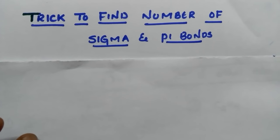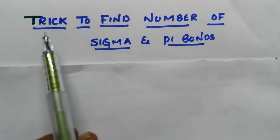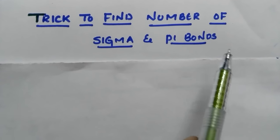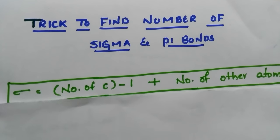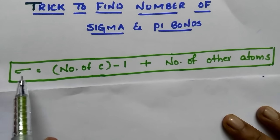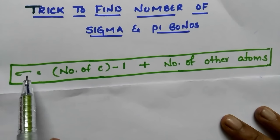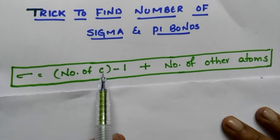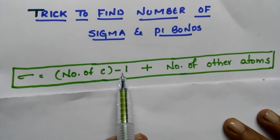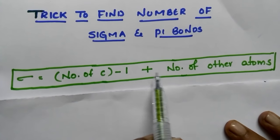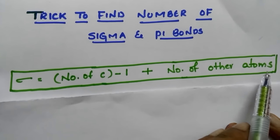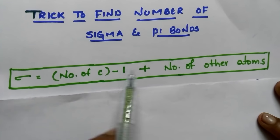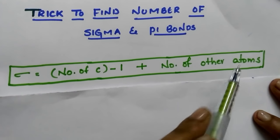Hi students. In today's class I am going to explain a trick to find the number of sigma and pi bonds in a molecule. In order to find the number of sigma bonds, the trick is to calculate the number of carbons and subtract 1 from that. To that, add the total number of other atoms present in the molecule: number of carbons minus 1, plus number of other atoms.